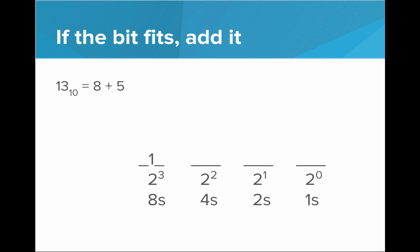With the remaining bits, we need to represent a 5. So can 4 fit into 5? Yes. So let's add a 1 there. We see that 13 can actually be expressed as 8 plus 4 plus 1. So now we need to represent 1 with our remaining bits. So can 2 fit into 1? No, it can't. So we'll put a 0 there. 1 fits into 1. 1 is exactly 1, so we'll put a 1 there.